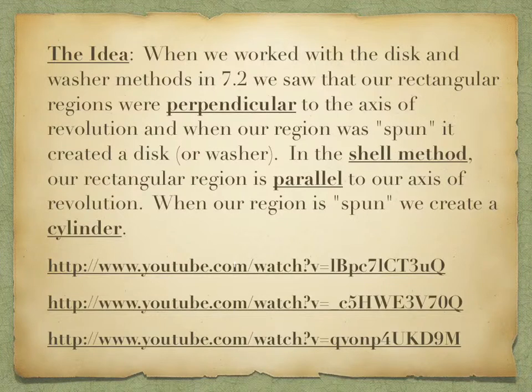In the shell method, our region ends up being parallel to our axis of revolution. So we draw our rectangle differently — that's important. That's where these drawings are going to come into play. If you draw your rectangle incorrectly, you're integrating with respect to the wrong variable. Parallel to our axis of revolution.